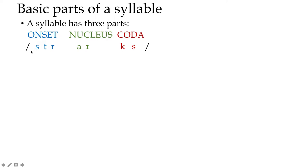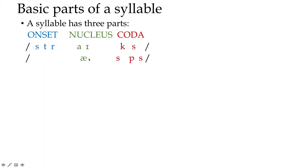So if we see the English word 'strikes,' 'str' is the onset — what comes first. 'Ai' is the nucleus, the middle part that actually carries the sound; if we were to shout this word across a long distance, that would be the part really communicating. And 'ks' would be the coda — the consonants which appear after the nucleus. We could also have no onset, as in the word 'asps,' which has a very complex coda with three consonants.